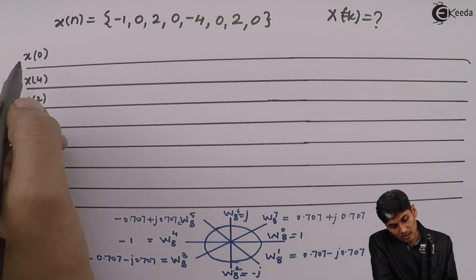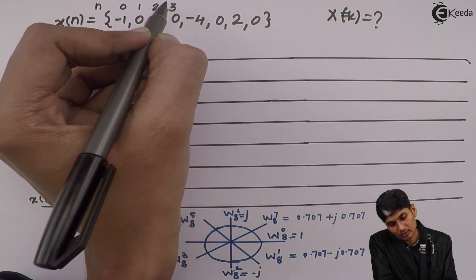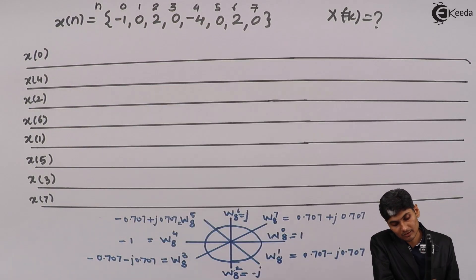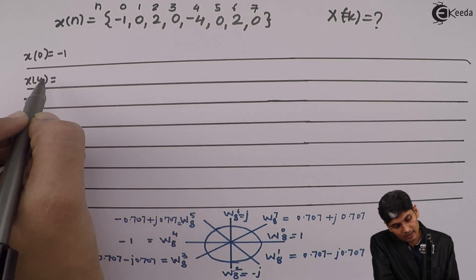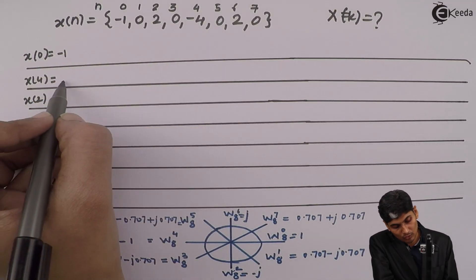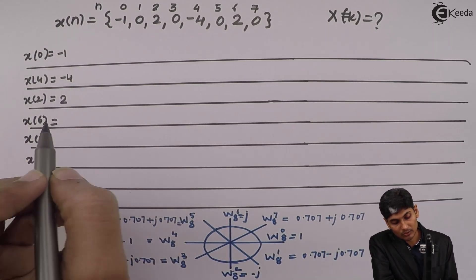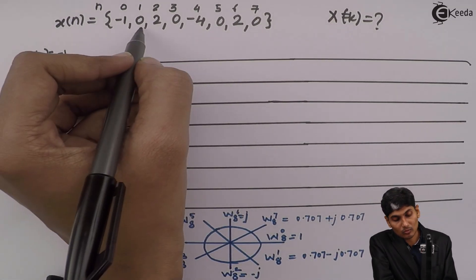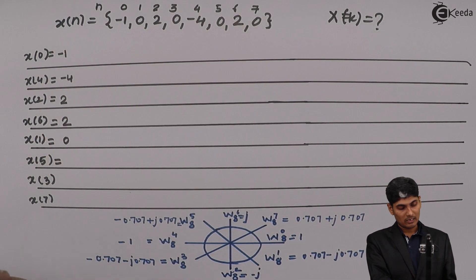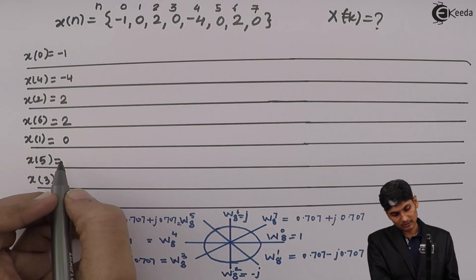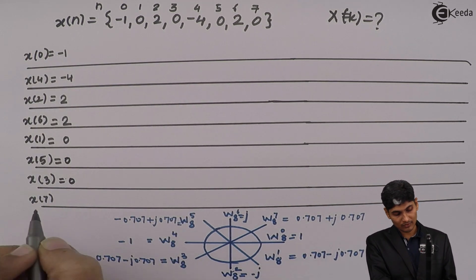Now, where is n equal to 0? n=0 is minus 1, n=1 is 0, n=2 is 2, n=3 is 0, n=4 is minus 4, n=5 is 0, n=6 is 2, n=7 is 0. In the shuffled order: x(0) = minus 1, x(4) = minus 4, x(2) = 2, x(6) = 2, x(1) = 0, x(5) = 0, x(3) = 0, x(7) = 0.